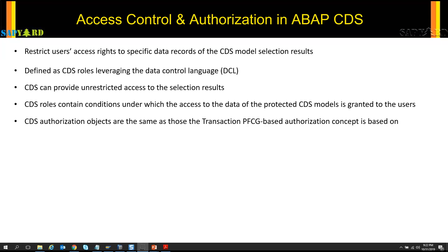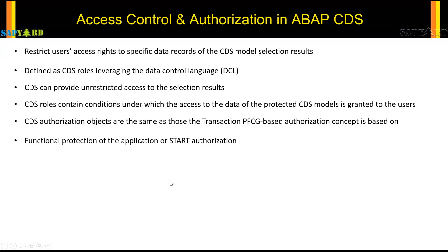Before moving to the next chapter, I want to introduce two terminologies: start authorizations and instance authorizations. From an authorization point of view, an end user should only have access to the functions and data they really need for fulfilling a specific task or business role. Authorizations always follow the principle of least privilege — a user should only have the minimum set of authorizations needed to carry out their assigned role.